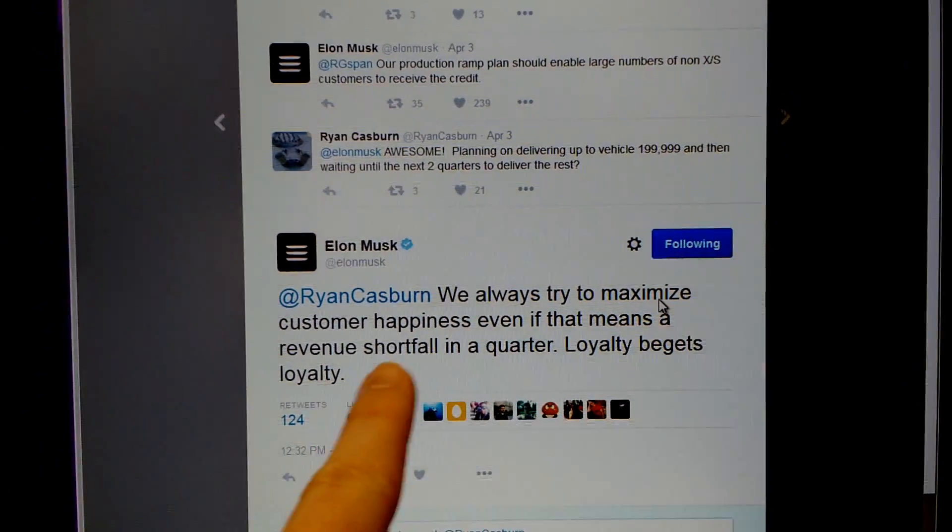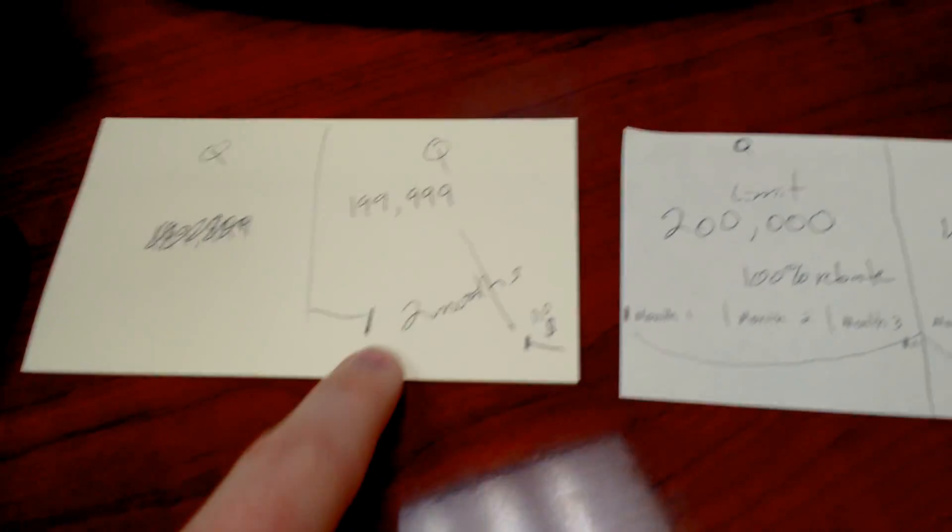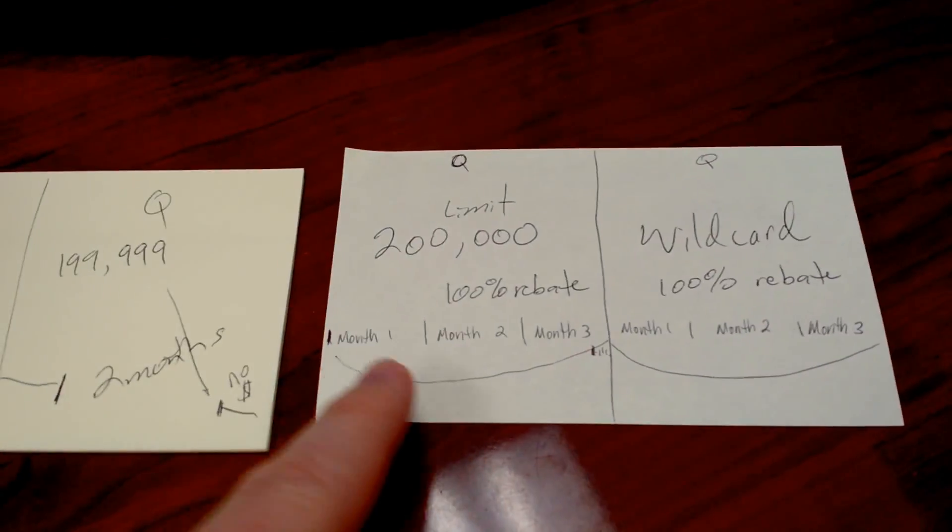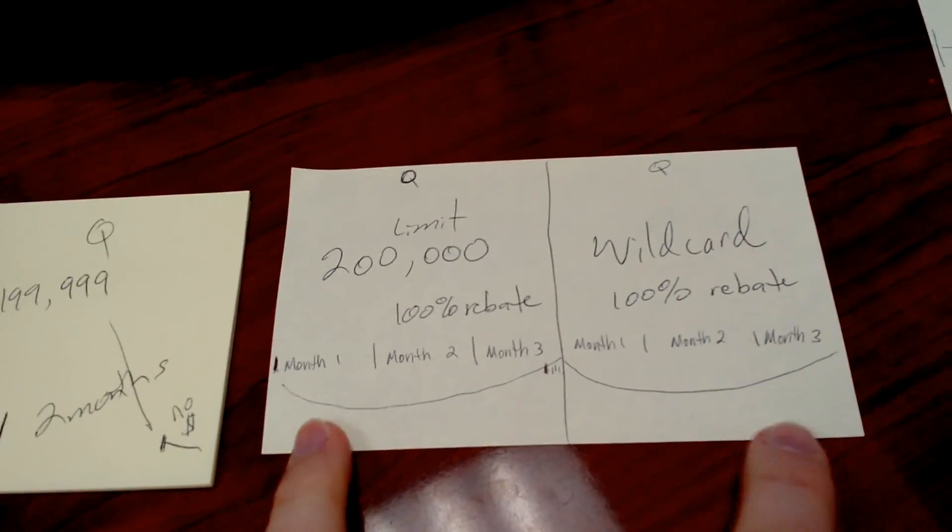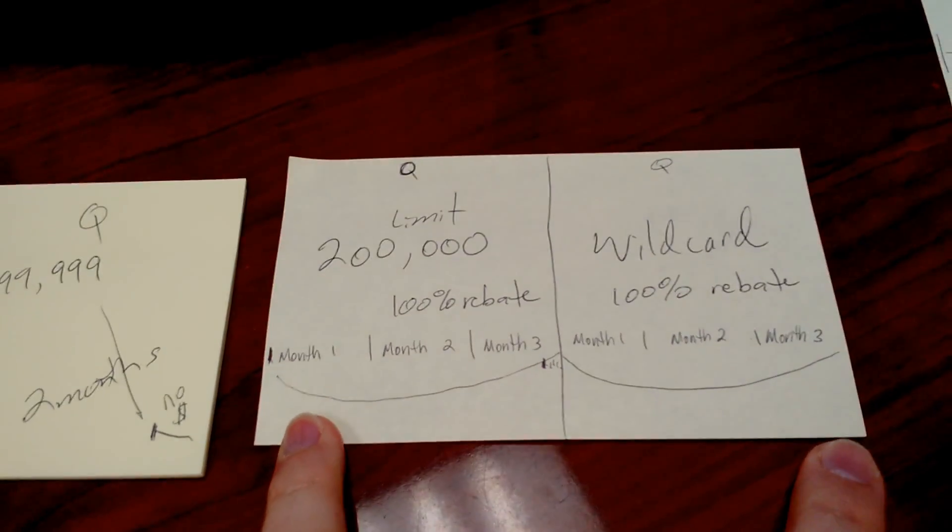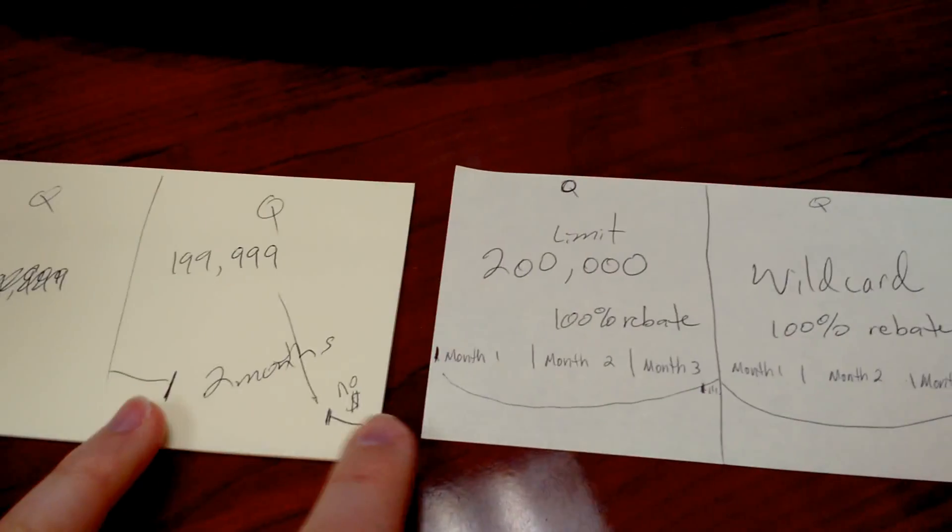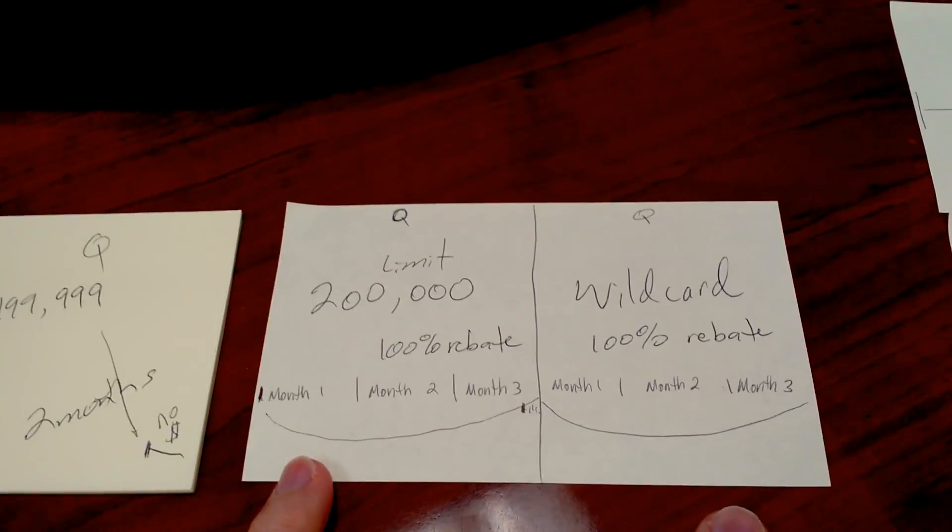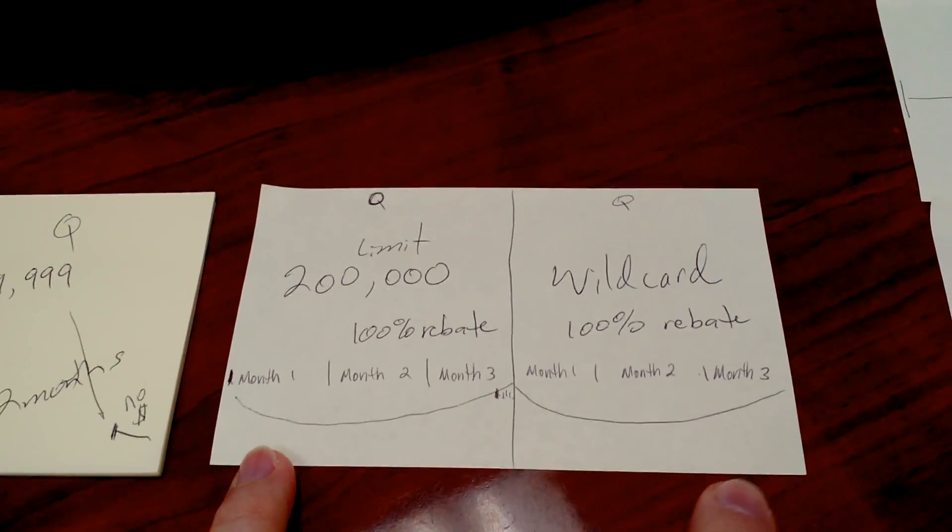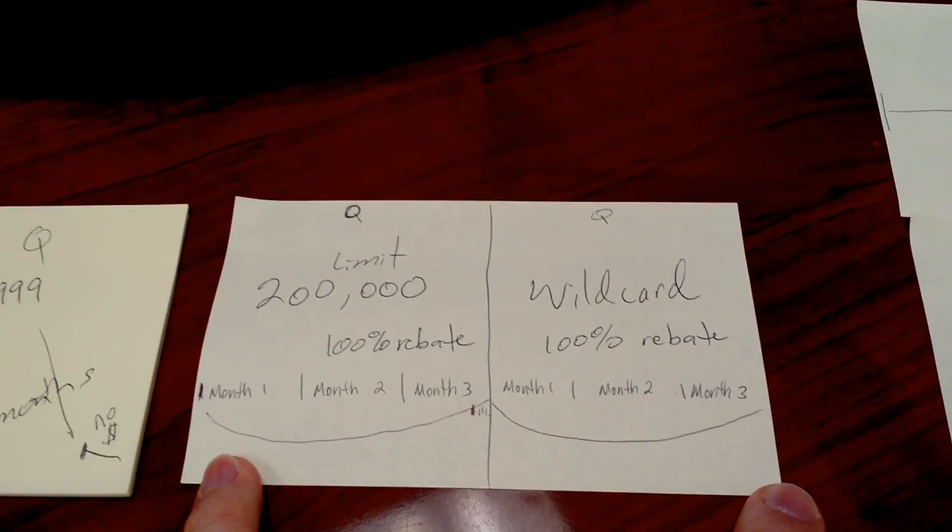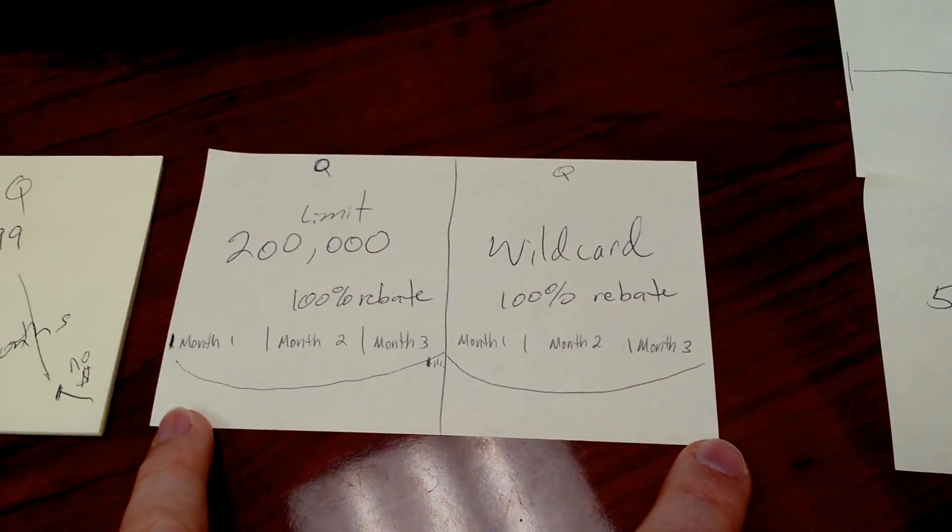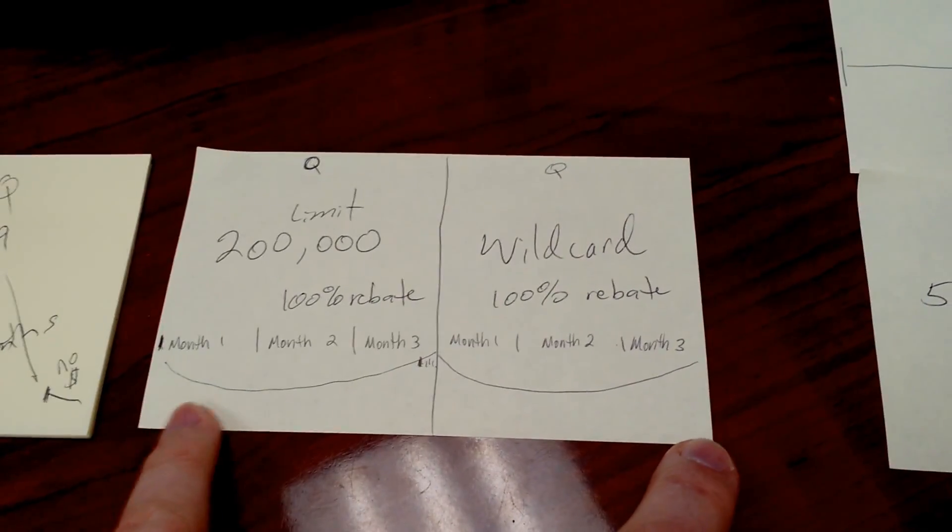What does that mean? That means putting off sales for part of a quarter so that they can maximize the number of EVs that they can crank out. They could store up a hundred thousand Teslas, maybe even more, maybe a hundred fifty thousand or something, and crank them out during these two quarters so that as many US buyers can get one hundred percent of the rebate.